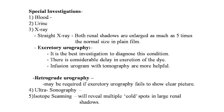Investigations include blood, urine, and X-ray. On straight X-ray of the abdomen, both renal shadows are enlarged up to 5 times normal size. Excretory urography is best to diagnose this condition — there is considerable delay in excretion of the dye; infusion urogram with tomography is more helpful. Retrograde urography may be required if excretory urography fails to show a clear picture. Ultrasonography and isotope scanning will reveal multiple cold avascular spots in large renal shadow.